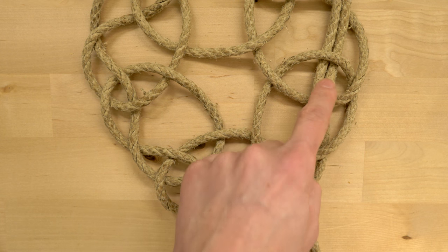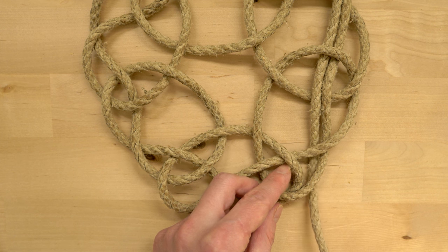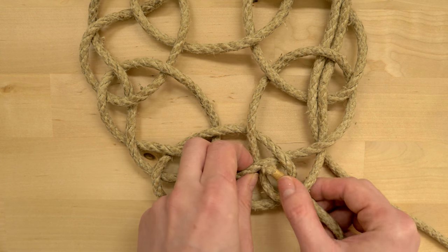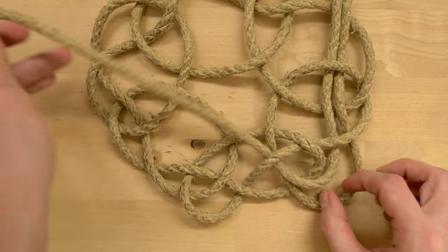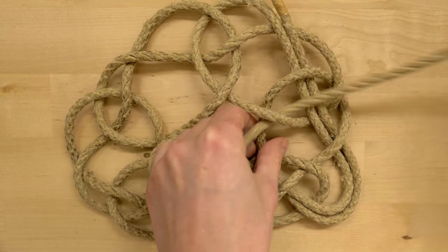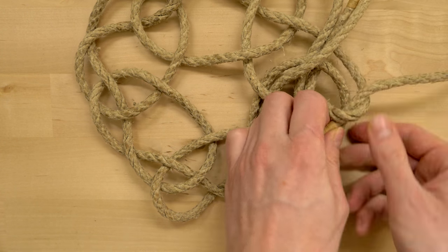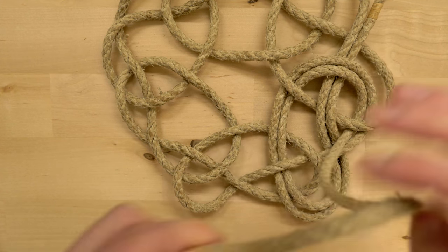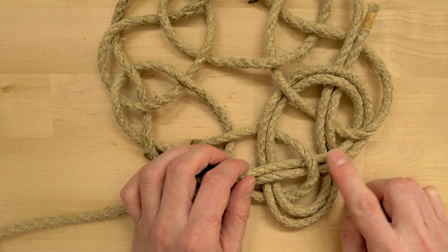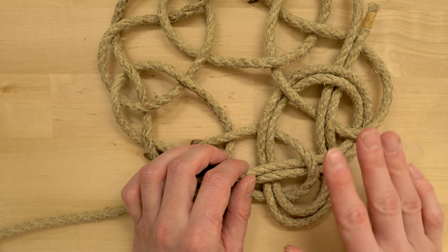You would work in your working end all the way until you run out, and then we begin with the standing end, again following your other end and doubling up your knot. Continue working in your ends until you run out of rope, and you should have a three-pass version of this mat ready.